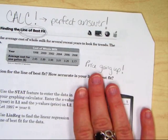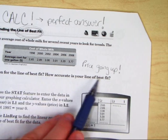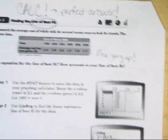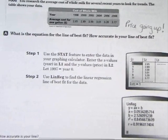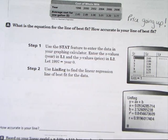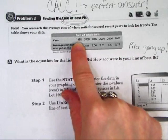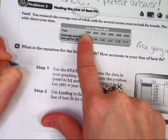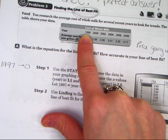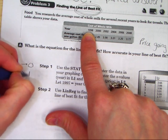So this is going to be a positive correlation. It says, what is the equation for the line of best fit? How accurate is your line of best fit? Now the good news is, I've already wrote the directions down for you. You can just sit back and watch the video right now. But what I want you to understand is they started in 1998. They actually let, for whatever reason, they let 1997 be year zero.